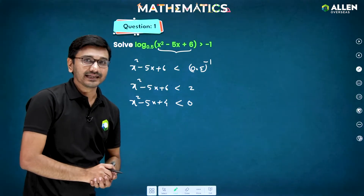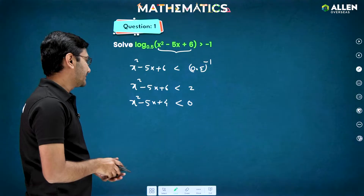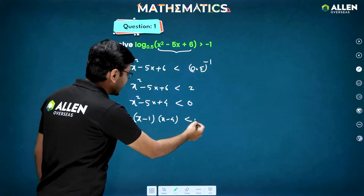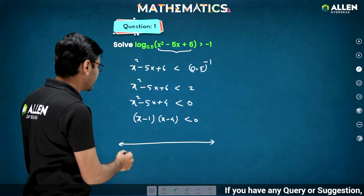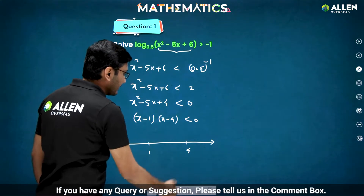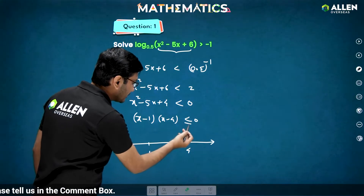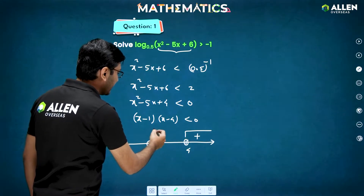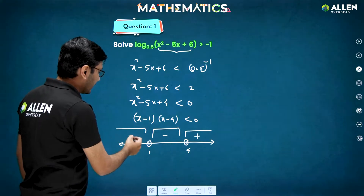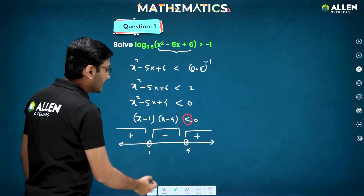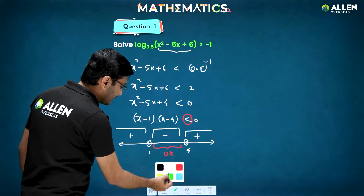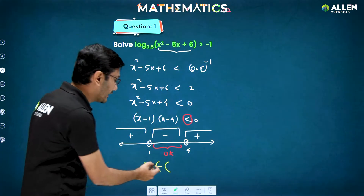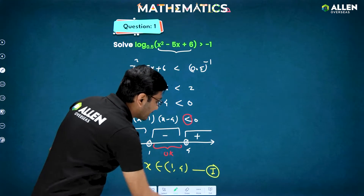When solving inequalities, keep 0 on the right side so you can use the wavy curve method. Factorizing x² − 5x + 4 gives (x − 1)(x − 4) < 0. Placing roots 1 and 4 on the number line — since there's no equality sign, open circles are used. To the right of 4 we get positive, between 1 and 4 negative, left of 1 positive. We need less than 0, so the solution from this inequality is the open interval (1, 4).